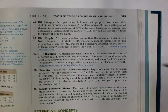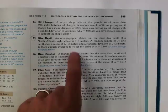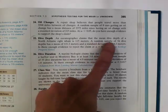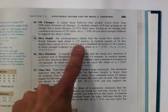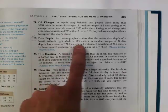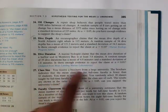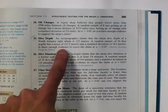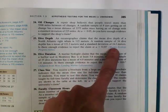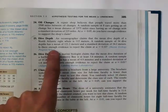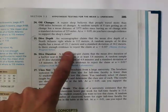Okay, so let's take a look at this problem. An oceanographer claims that the mean dive depth of a North Atlantic right whale is 115 meters. A random sample of 34 dive depths has a mean of 121.2 meters and a standard deviation of 24.2 meters. Is there enough evidence to reject the claim at alpha equal 0.1?